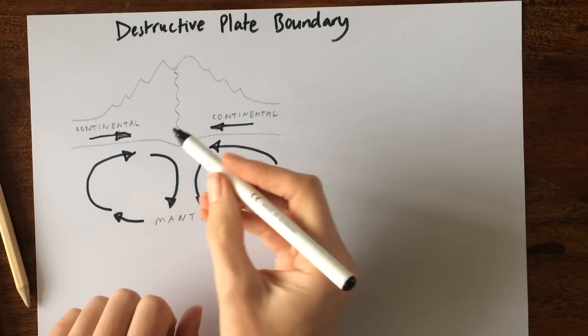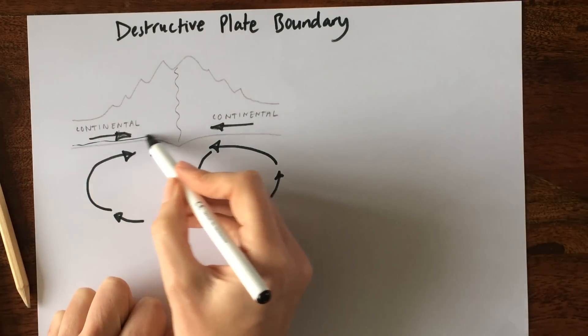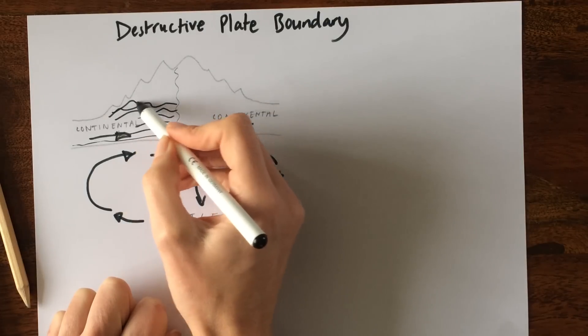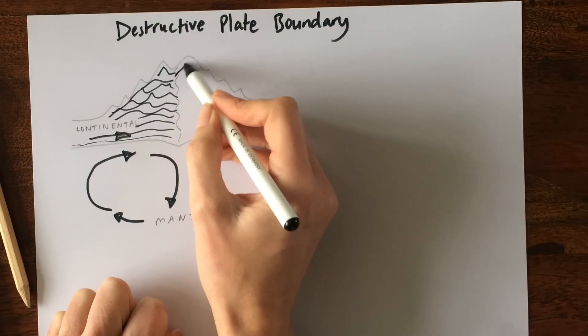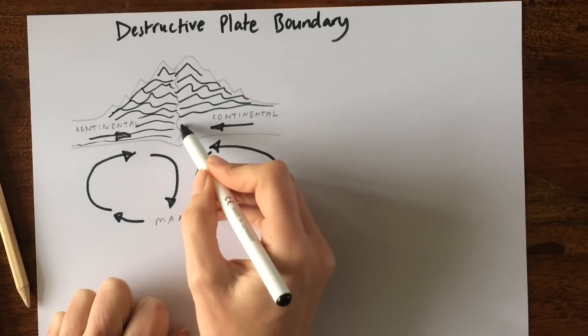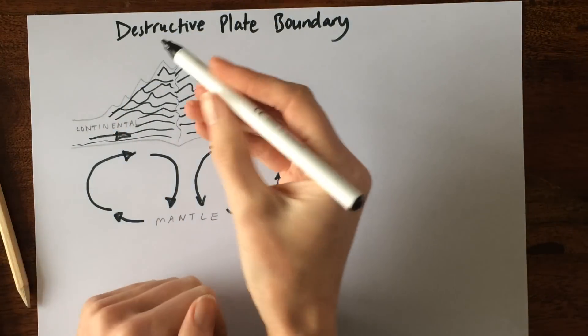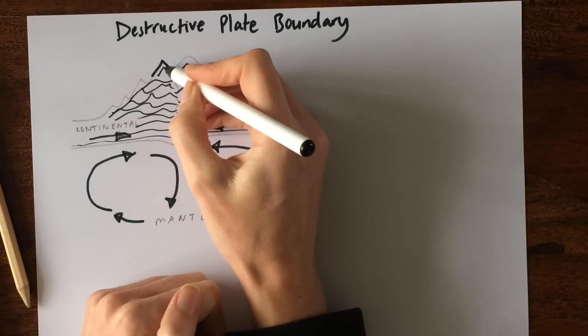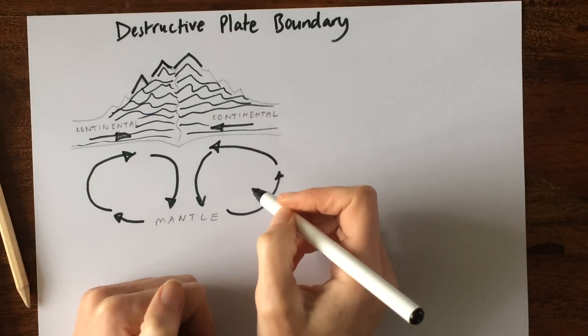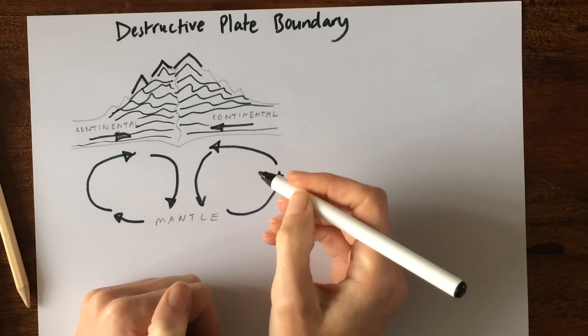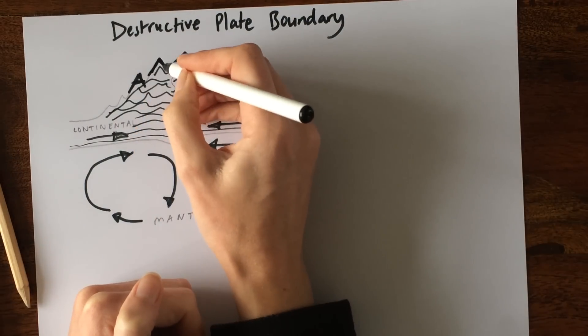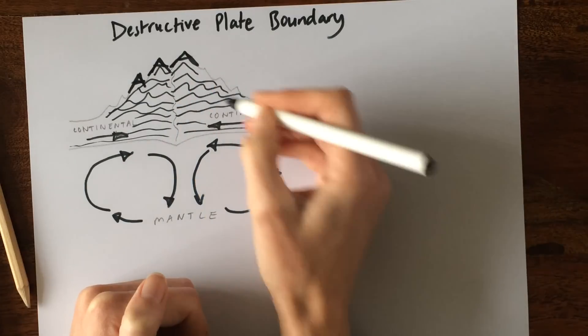And so the layers of sedimentary rock here are going to start to crumple up to make these folds just like this. It would crumple up because of the pressures being applied, and we would end up with these fold mountains. Where we have a peak of the mountain, like that's a mountain peak there and that's a mountain peak there, we call those the anticlines. And a nice way of remembering that is that they form the letter A for anticlines. So the peaks are anticlines.